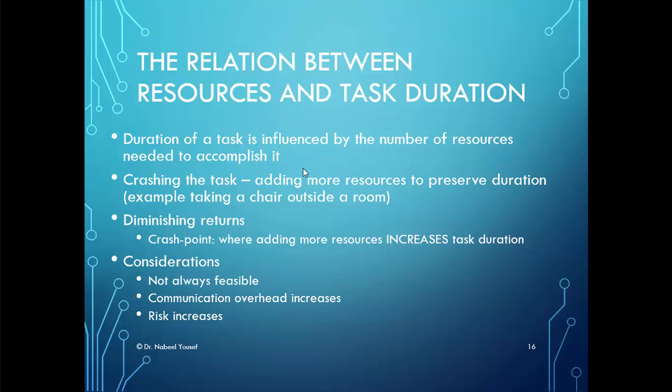The duration of a task depends on the number of resources available. For example, two people might move a sofa faster than one person, and three could also assist, but at a certain point increasing the number of people will actually increase task duration. This point is called the crashing point — instead of assisting each other, four or five people might create a discussion or argument about how to move the sofa, extending the time or causing it to be done incorrectly.